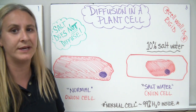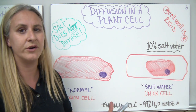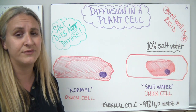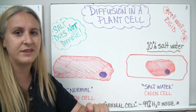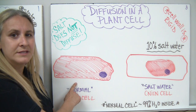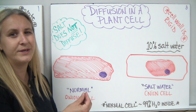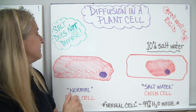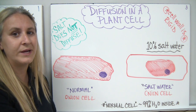Now let's talk about diffusion in a plant cell. We had our bag simulating a cell — that was just an artificial scenario to get us started. Later in the lab, we tested diffusion in an actual living cell. We took our onions, peeled a thin layer of onion cell, and looked at it under the microscope. We used purple or red onions so you could see the pigment and the cytoplasm without needing a stain. This was our normal onion cell under regular situations.